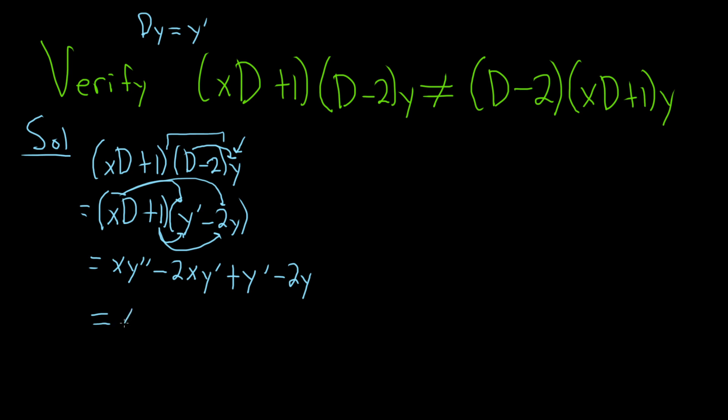So this is equal to xy double prime. There's a 1 here, so I'm going to factor out a y prime and write it like this, plus 1 minus 2x, I know it's a little confusing, and then y prime. I'm doing this because I want to write the final result in operator form.